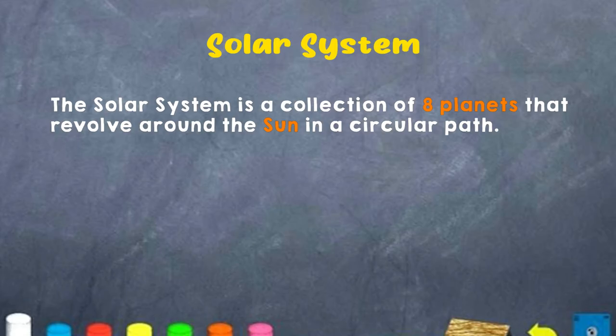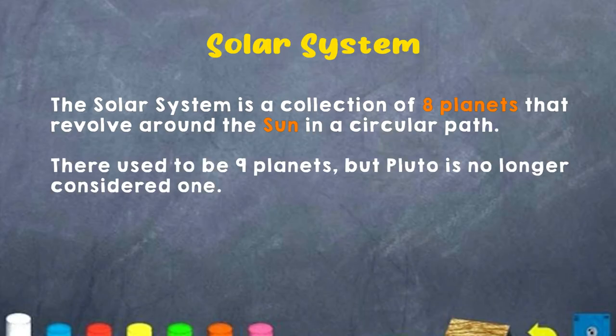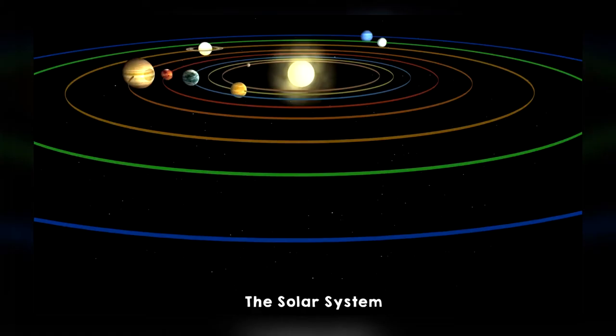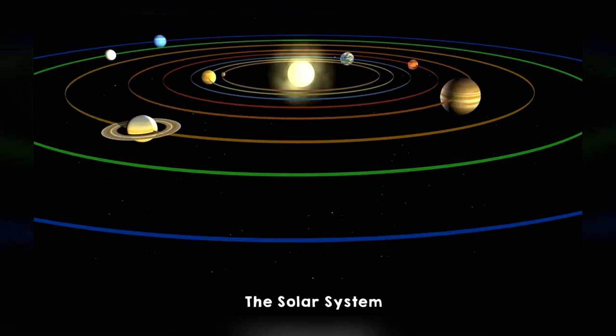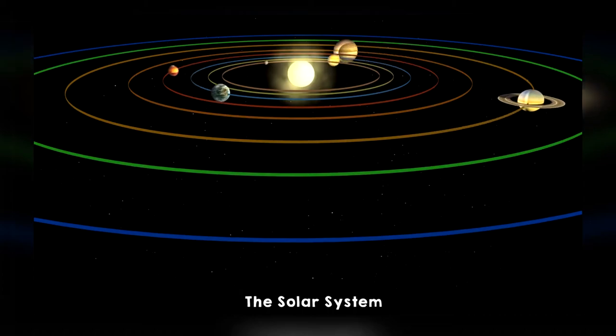What is a solar system? The solar system is made up of a collection of eight planets that revolves around the sun in a circular path. However, it used to be nine planets, but now Pluto is considered to no longer be a planet. So, boys and girls, you heard correct — there are eight planets, and a solar system is a collection of those eight planets that revolves around the sun in a circular path.